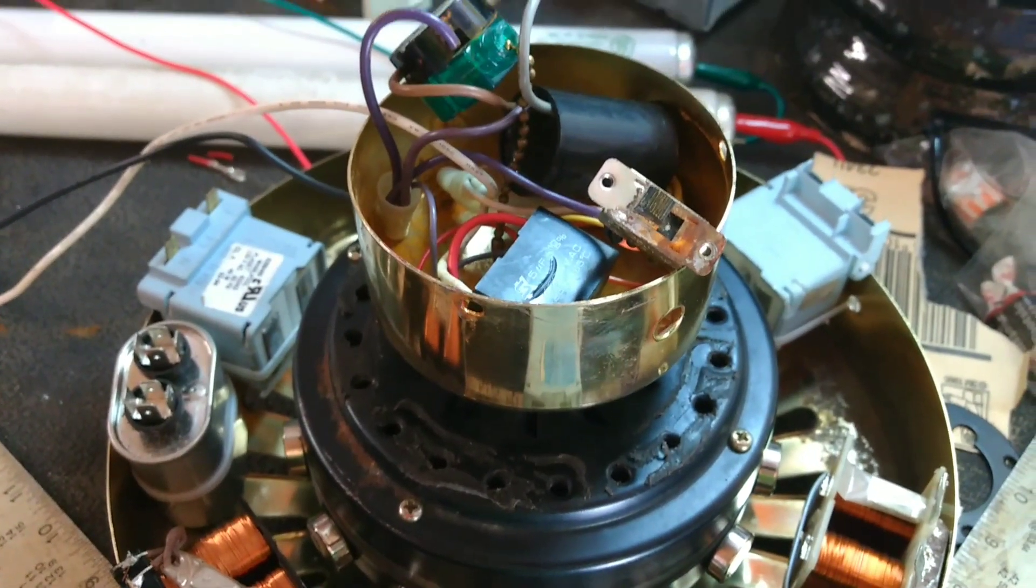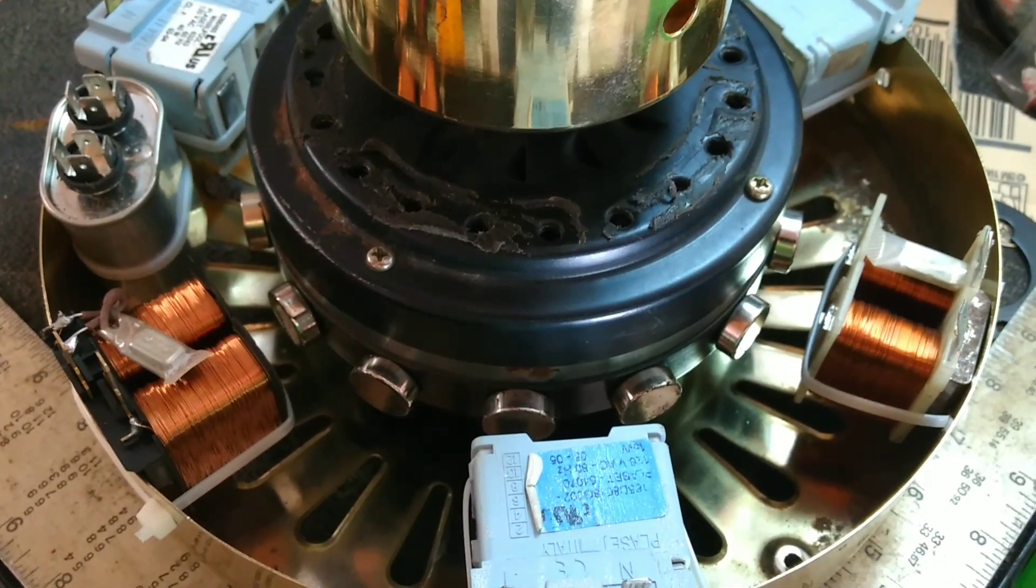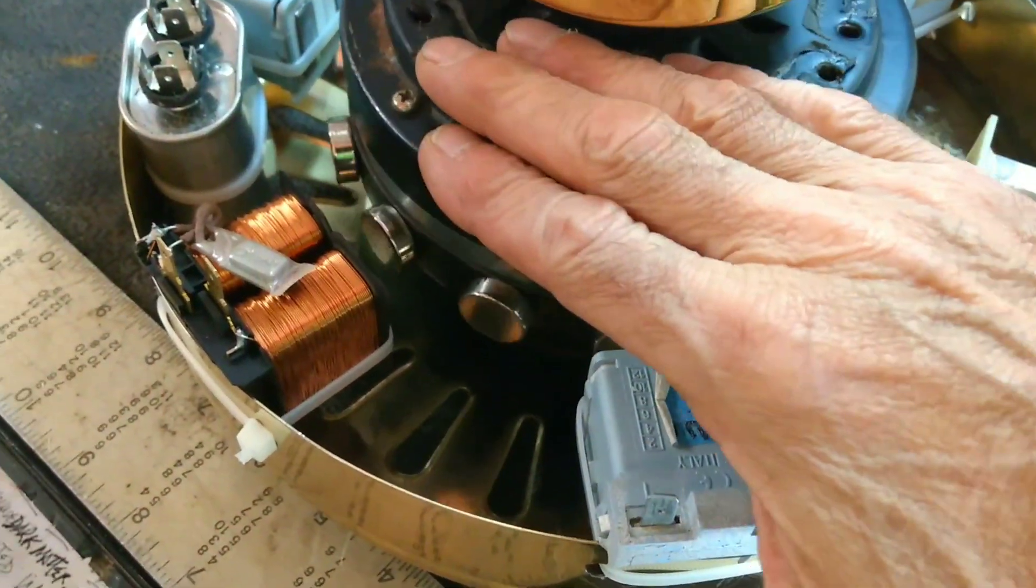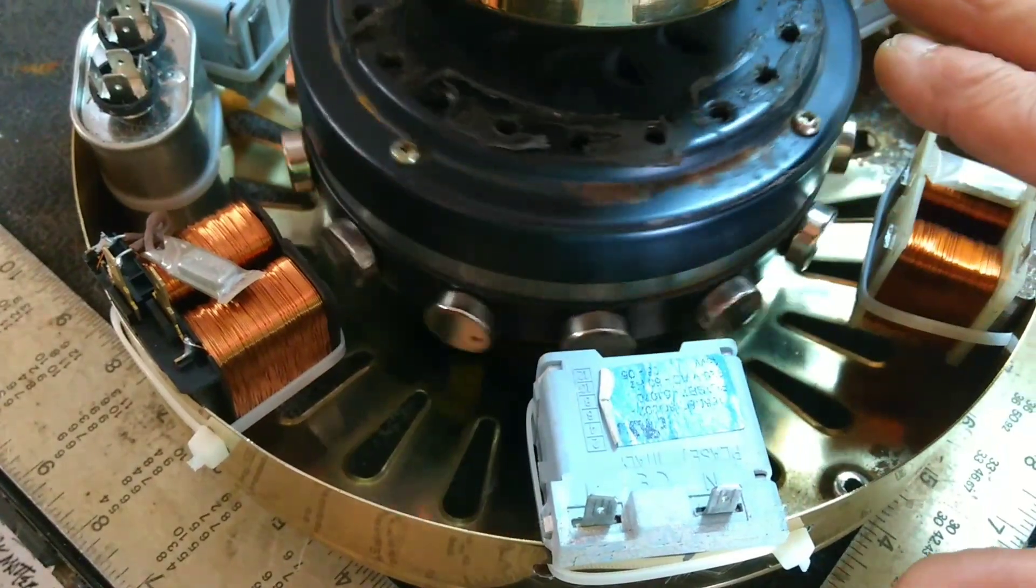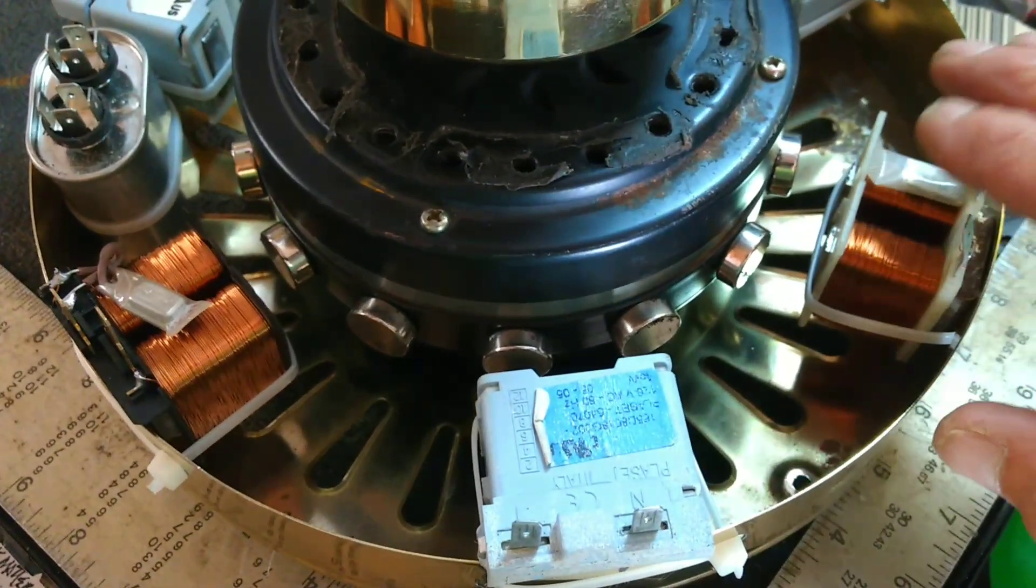This is an old ceiling fan that I found that was in kind of crappy shape, but I took it off, and I put these magnets around it. Those magnets are just stuck to the body, and then I took these little coils here.